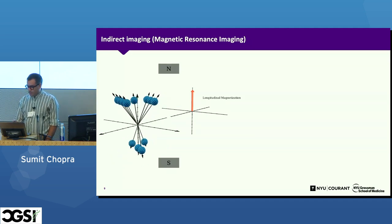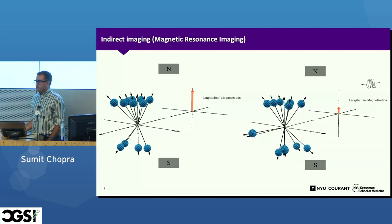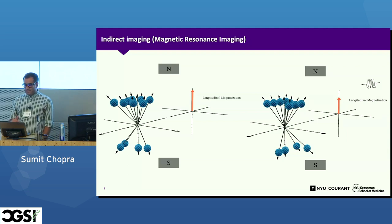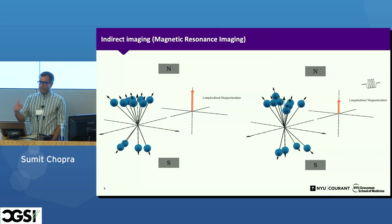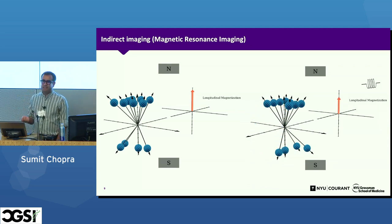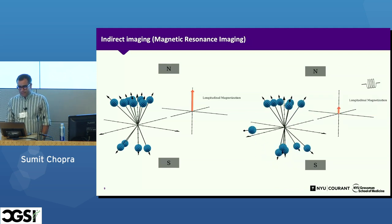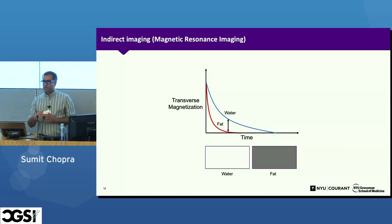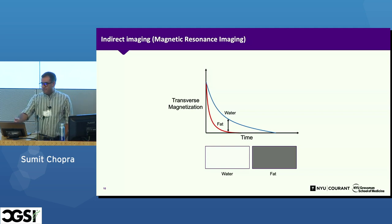When you stop the radio frequency pulse, the reverse happens: the protons dephase and go back to their low energy state, the transverse magnetization decreases, and the longitudinal magnetization goes back up. When you place an electric coil near these changing magnetizations, as physics 101 would say, an electric current is generated — and it's that current that gets measured as the signal by the machine. Notably, protons from different tissues take different amounts of time to return to their natural state. For water it takes longer; for fat, much faster. This difference in time gets translated into different shades of gray on the actual image.